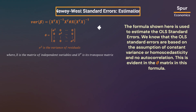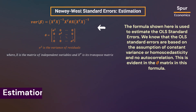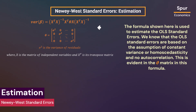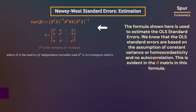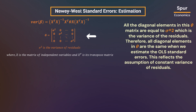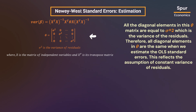The formula shown here is used to estimate the OLS standard errors. We know that the OLS standard errors are based on the assumption of constant variance or homoscedasticity and no autocorrelation. This is evident in the theta matrix in this formula. All the diagonal elements in this theta matrix are equal to sigma squared, which is the variance of the residuals. Therefore, all diagonal elements in theta are the same, reflecting the assumption of constant variance of residuals.